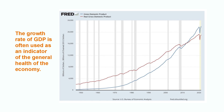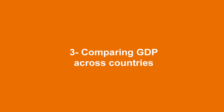GDP is important because it gives information about how an economy is performing. The growth rate of GDP is often used as an indicator of the general health of the economy. In broad terms, an increase in real GDP is interpreted as a sign that the economy is doing well. For instance, you can see that the US economy was growing between 2012 and 2019. Then you can see the effect of the COVID-19 crisis on GDP growth before a recovery.